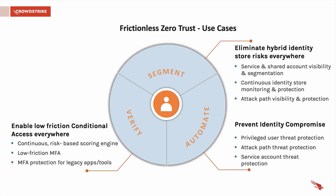Let's discuss some of the key capabilities of CrowdStrike Falcon Zero Trust. The first key capability is segmentation — the ability to look at identity across multiple identity stores. We do this by pulling in all objects from AD and other identity stores, correlating that data into a single business card. This provides visibility and classification of your users and endpoints based on their type.